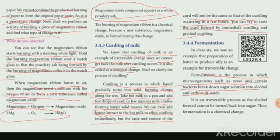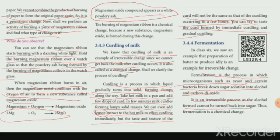In fermentation, yeast and bacteria act on a sugar solution and release alcohol and carbon dioxide. It is an irreversible process, as the alcohol formed cannot be turned back into sugar. Fermentation is therefore a chemical process.